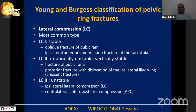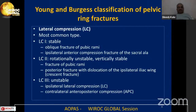LC1 injuries are relatively stable — there is an oblique fracture of the pubic rami and an ipsilateral anterior compression fracture of the sacral ala. LC2 has a rotationally unstable but vertically stable element, with a posterior fracture and dislocation of the ipsilateral iliac, meaning you get a crescent fracture. LC3 is an unstable fracture where you have an ipsilateral lateral compression with contralateral APC also involved.